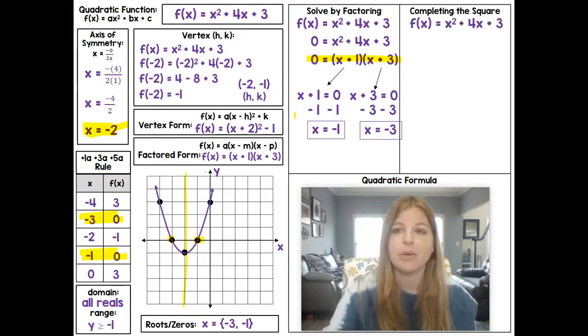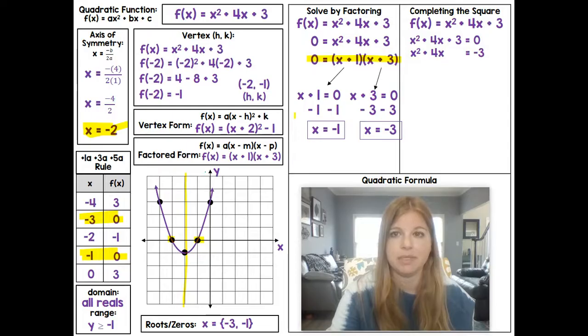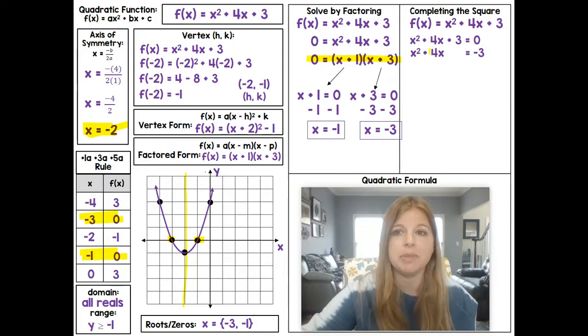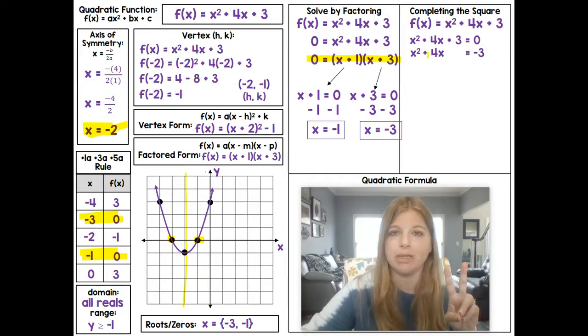Completing the square. So if we took this function, we set it equal to zero as an equation, and we get x² + bx to be by itself. So we move that 3 to the other side. We then have to purposely make a perfect square trinomial. So we take a look at the b value, the b is 4. We take half of 4, which is 2, and then we square it, which actually also happens to be 4.